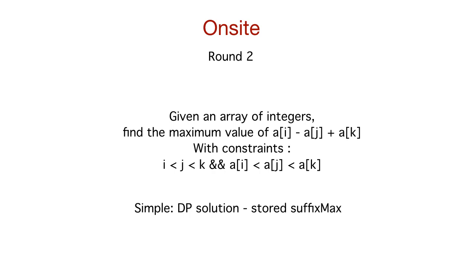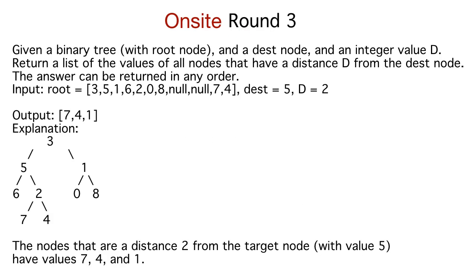After round two everything was going really well — the interviewers were nice and asked me about my background. Then round three also went well. I was given a tree and asked to find all nodes at distance d from a given destination node. For example, when the destination node is 5 and distance is 2, the answer is nodes 7, 4, and 1. It's fairly easy if you're familiar with tree implementations.